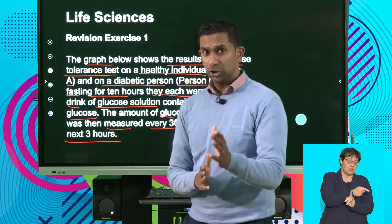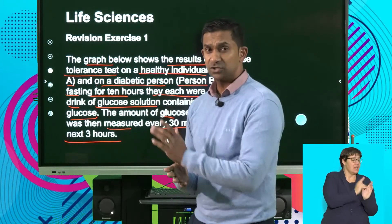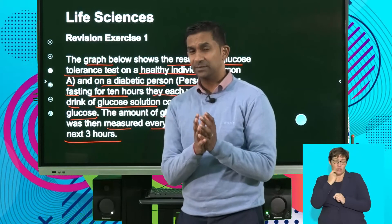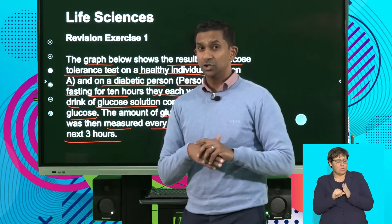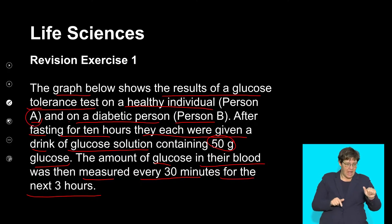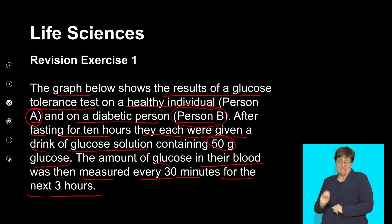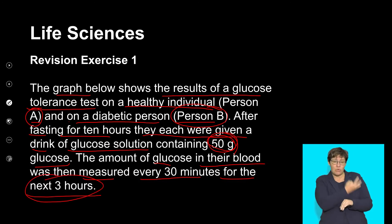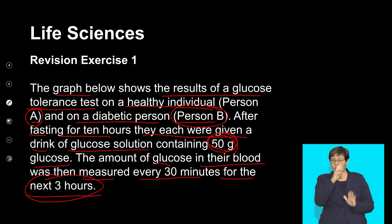The previous night would have been the last meal, they would have slept through the night, got up the next morning and gone into a clinic that would test their blood glucose level — essentially establishing the baseline glucose level. Person A is not affected with diabetes, person B is a person affected with diabetes. Both were given a fixed, known amount of glucose solution, which was then monitored over three hours to see how blood glucose levels were affected.